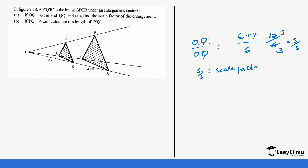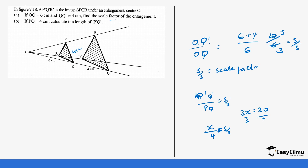The next part asks: if PQ = 4 cm, find P'Q'. Remember, the length of the object multiplied by the scale factor gives the length of the image. So P'Q' over PQ equals 5 over 3, meaning P'Q' over 4 equals 5 over 3. Cross-multiplying gives 3·P'Q' = 20, so P'Q' = 20 over 3 cm. Equivalently, 4 times 5 over 3 equals 20 over 3.